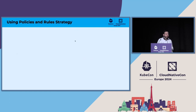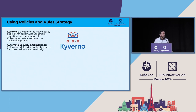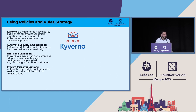The next strategy is using policies and rules. One of my favorite tools is Kyverno — a Kubernetes-native policy engine that automates validation, mutation, and generation of Kubernetes resources. You can automate security and compliance, enforce predefined security standards for cluster add-ons automatically. The cool thing about real-time validation is that even before you try to deploy something into a cluster, if it violates one of your policies, Kyverno will stop that deployment from happening — blocking misconfigurations and enforcing best practices.